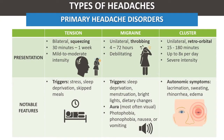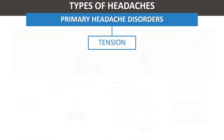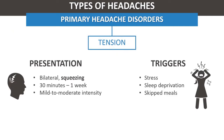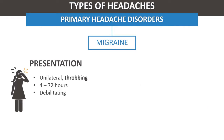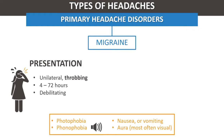The most common primary headache disorders are tension, migraine, and cluster headaches. Tension headaches are bilateral with squeezing pressure, last from 30 minutes to a week, and are mild to moderate in severity. Migraine headaches are debilitating, often unilateral and throbbing, last from 4 to 72 hours, and are associated with photophobia, phonophobia, nausea, or vomiting.